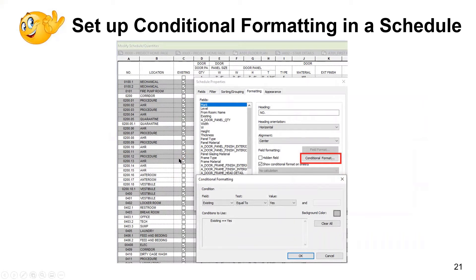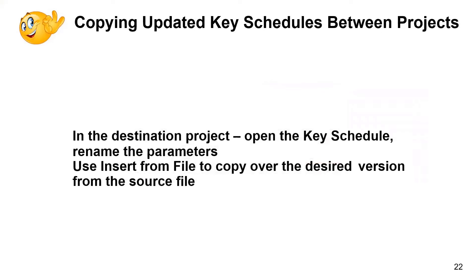Conditional formatting is an old workhorse of Revit schedules. In our case, we had to shade existing doors. We had a Yes/No 'Existing' parameter — checked for existing, unchecked for new. We set up a conditional format where Existing equals Yes, which shaded those doors. For added punch, try orange or pink.